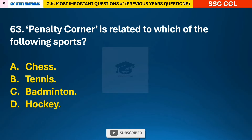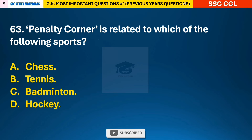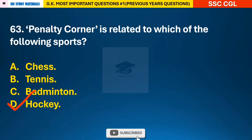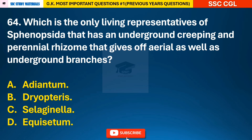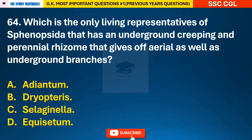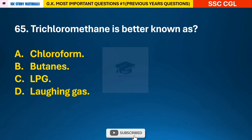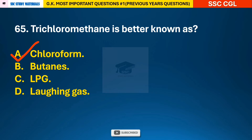Question 63: Penalty corner is related to which of the following sports? — answer D: hockey. Question 64: Which is the only living representative of Ppenopsida that has an underground creeping and perennial rhizome that gives off aerial as well as underground branches? — answer D: Equisetum.